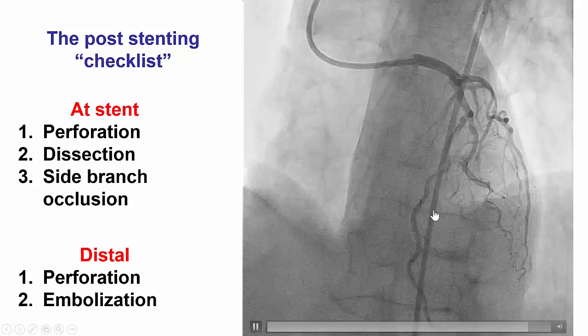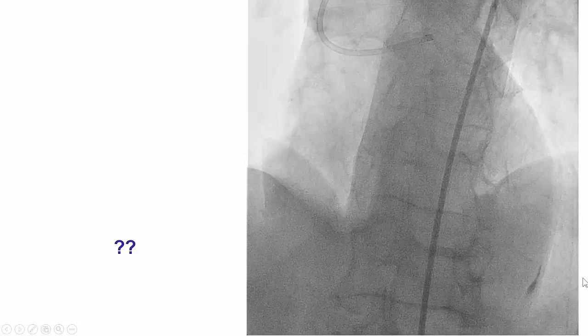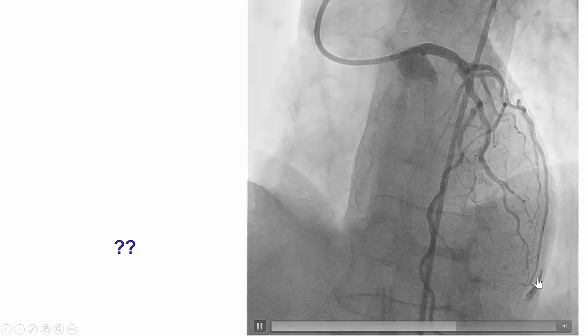At the site of the stent, we make sure there is no perforation — which there is not — and no dissection at the proximal or distal edge, and that the side branches are all there. But we also want to look distally for perforation or distal embolization. Looking more carefully distally, there is some staining, and that staining is highly suggestive of a distal coronary perforation.